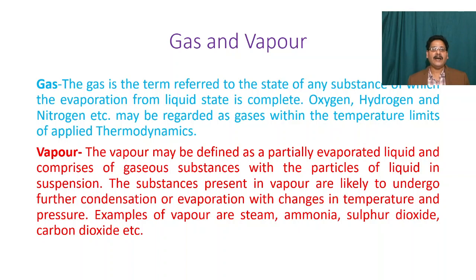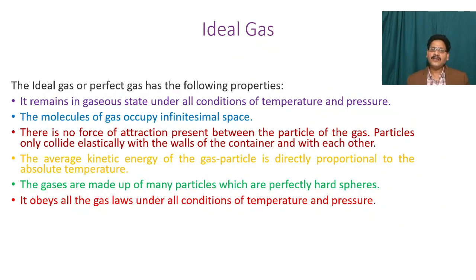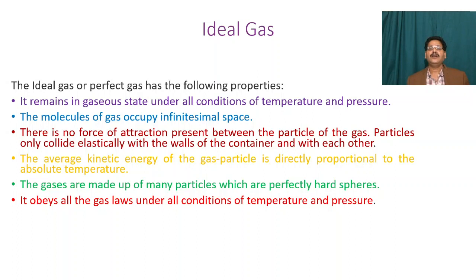Examples of vapor are steam, ammonia, sulfur dioxide, carbon dioxide, etc. Next, we'll discuss the ideal gas. An ideal gas, or perfect gas, has the following properties. The first is that the ideal gas remains in a gaseous state under all conditions of temperature and pressure — variation in temperature and pressure will have no bearing on its state.